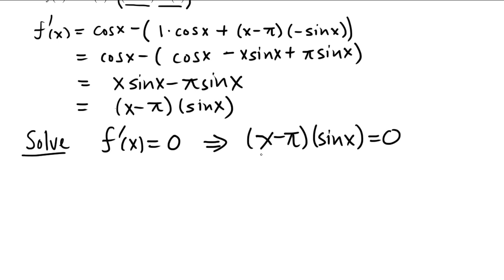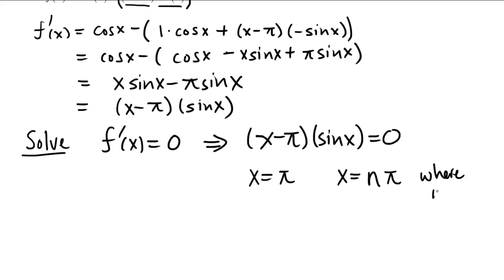The reason it's nice to have a factored expression equal to 0 is because you just set each factor individually equal to 0. If (x minus π) equals 0, that means x is equal to π. And if sine x equals 0, that means x equals n times π, where n is any integer. The symbol we use for integers is ℤ — the set of all positive or negative integers and 0 as well. We could really summarize both solutions just by saying x equals nπ.